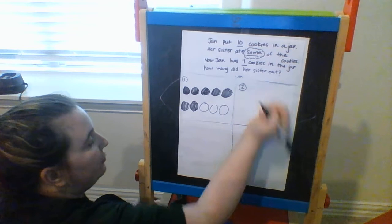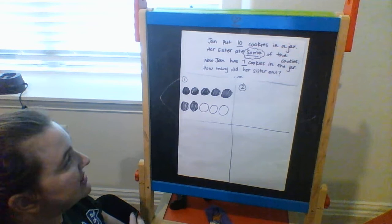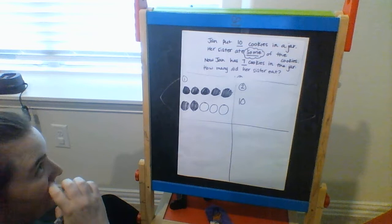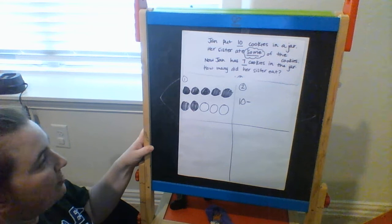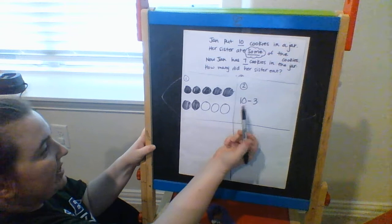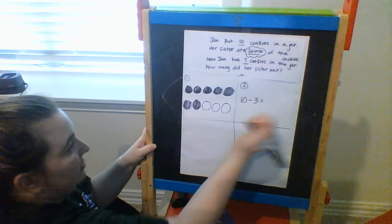Now I'm ready to move on to step 2, which is where I'm going to write a number sentence that matches my picture. I have to look at how many cookies did I start with — I started with 10. Now, if her sister ate some, when you're eating cookies you're taking some away, so that means I'm going to use a subtraction symbol. Her sister did not take 7 of them — she only took 3 of them. So I want my number sentence to show that 10 cookies take away 3 cookies equals 7 cookies still there.